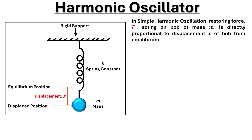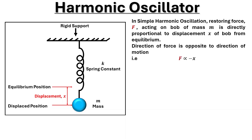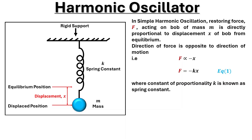In simple harmonic oscillation, restoring force f acting on the bob of mass m is directly proportional to displacement x of the bob from the equilibrium position. The direction of force is opposite to the direction of motion. The constant of proportionality k is known as the spring constant.